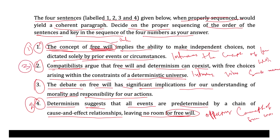Then after, we find the debate. The debate on free will has significant implication for our understanding of morality and responsibility for our actions. This can be called a conclusion — it concludes by highlighting the importance of the debate on free will in relation to morality and responsibility. Hence, the sequence would be one, four, two, and three.